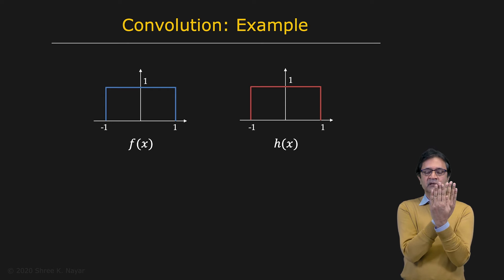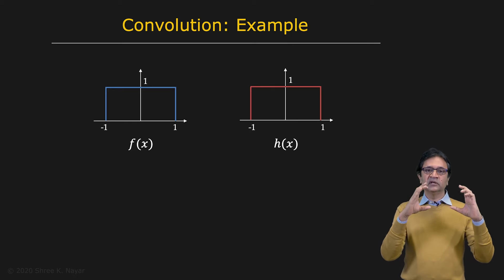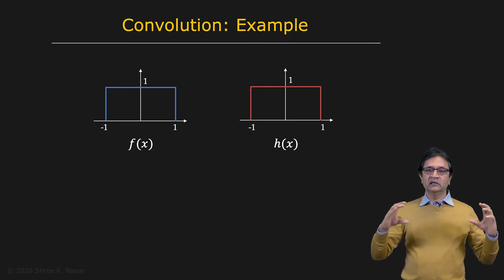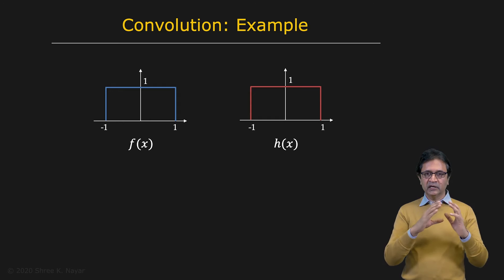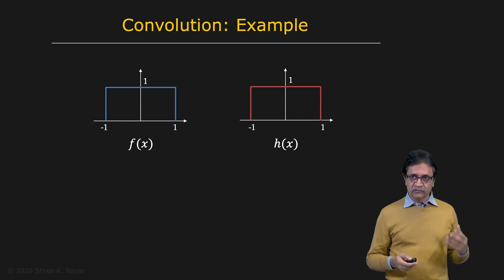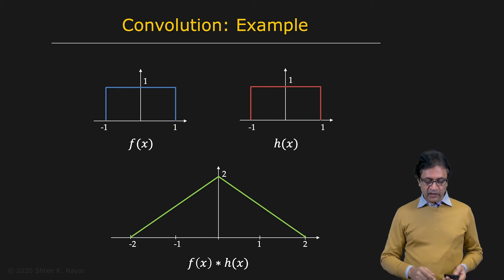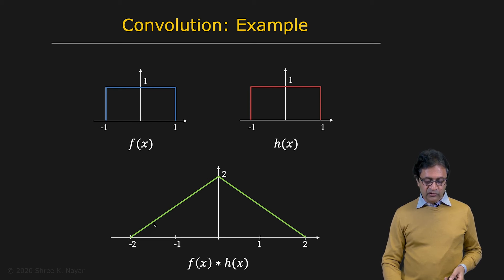As the rectangle slides — one slides over the other as a function of x — the area under the overlapping region begins to increase, and you can imagine that increases linearly with x. So that area increases linearly, and that area is what we are calculating given the definition of convolution. And so you end up getting a triangle. You start at 0 at minus 2, go up linearly.